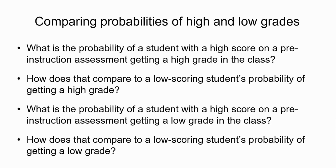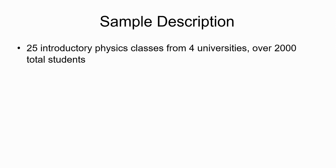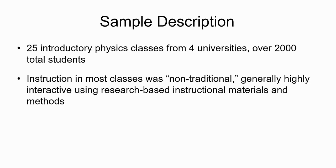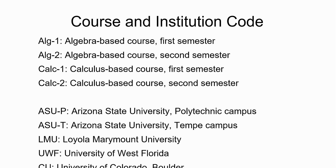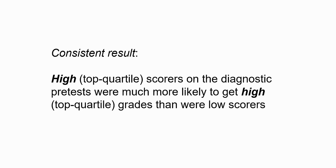The sample includes 25 introductory physics classes from five different campuses of four universities, with more than 2,000 total students. Most of the instruction in these courses was non-traditional, including a lot of interactive work and research-based materials and methods. The courses span first and second semester of both the algebra-based and calculus-based sequences across those institutions.